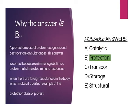Option B: A protection class of protein recognizes and destroys foreign substances. This answer is correct because an immunoglobulin is a protein that stimulates immune responses when there are foreign substances in the body, which makes it a perfect example of the protection protein.